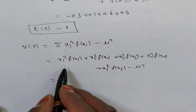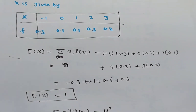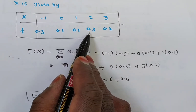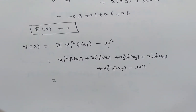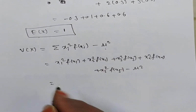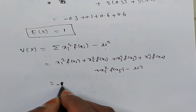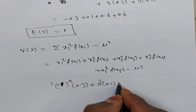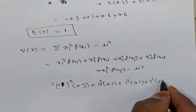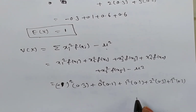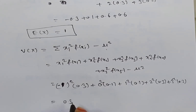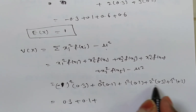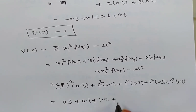Now x1 squared: x1 is minus 1, so minus 1 whole squared into 0.3, plus 0 squared into 0.1, plus 1 squared into 0.1, plus 2 squared into 0.3, plus 3 squared into 0.2, minus mu squared. This gives 0.3 plus 0 plus 0.1 plus 1.2 plus 1.8, which sums to 3.4.